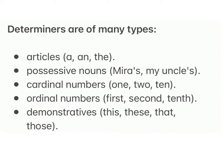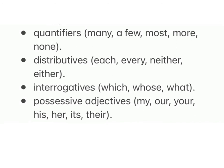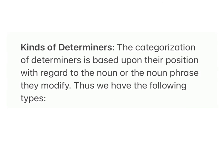Types of determiners include: possessives like 'Mira's' or 'my uncle's'; cardinal numbers (one, two, ten); ordinal numbers (first, second, tenth); demonstratives (this, these, that, those); quantifiers (many, a few, most, more, none); distributives (each, every, neither, either); interrogatives (which, whose, what); and possessive adjectives (my, our, your, his, her, its, their).